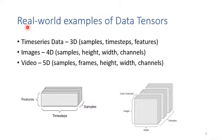Let's see some real-world examples of data tensors. The first example is time series data, which includes temperature, stock prices, or house prices — basically, feature values changing over time. Time series data are three-dimensional: the first dimension is the number of samples. Take the stock market as an example — suppose we want to collect stock price data to train a model.